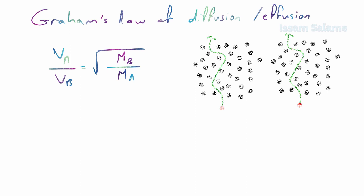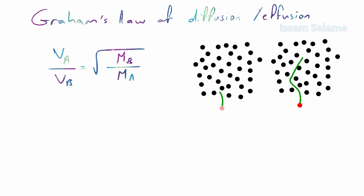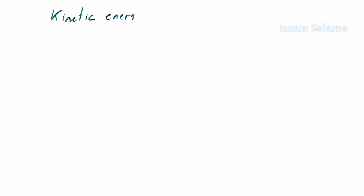As the mass of gas particles increases, they become heavier and their rate of diffusion becomes slower. Graham's Law was derived from the fact that, according to kinetic molecular theory, gases at the same temperature have the same kinetic energy.